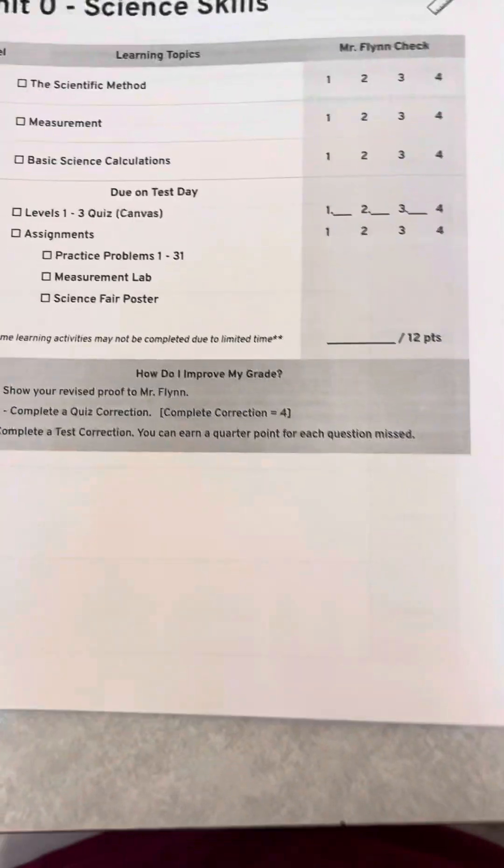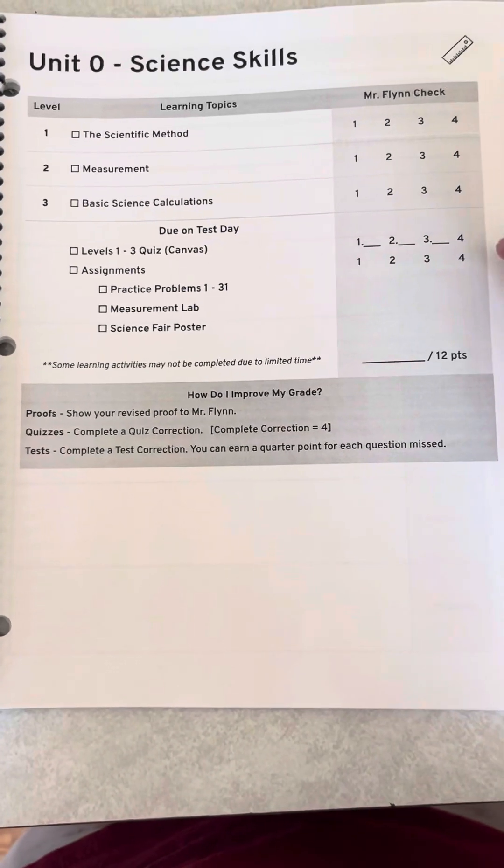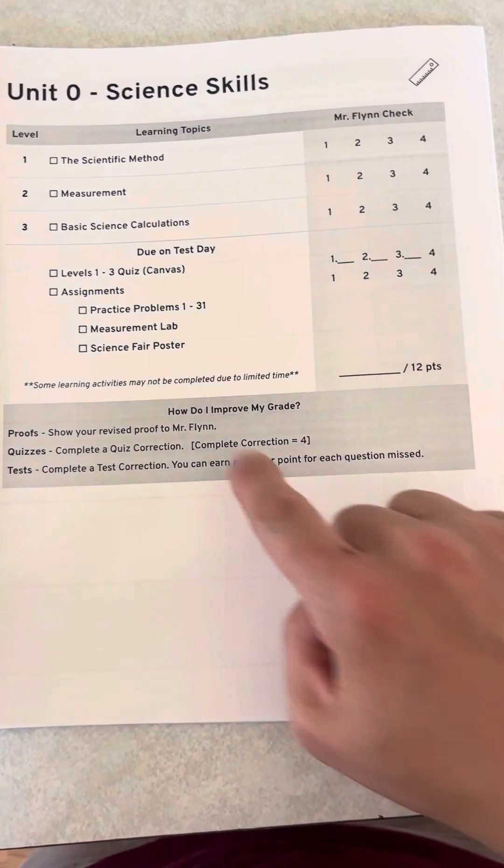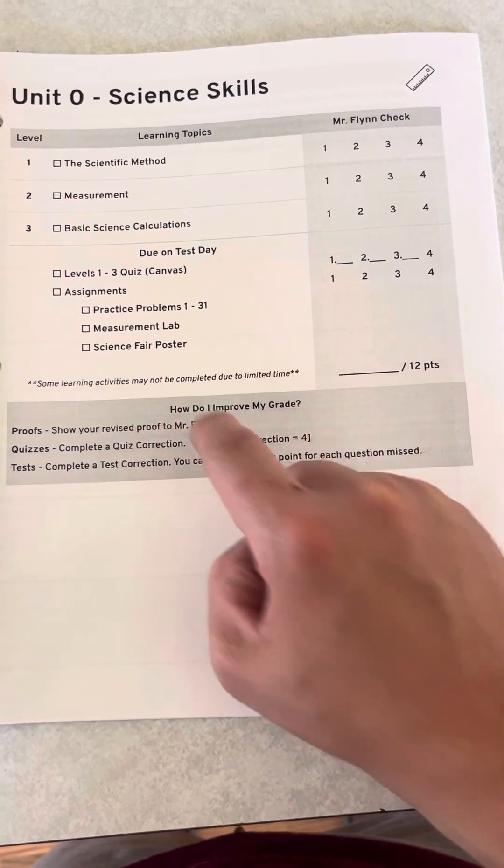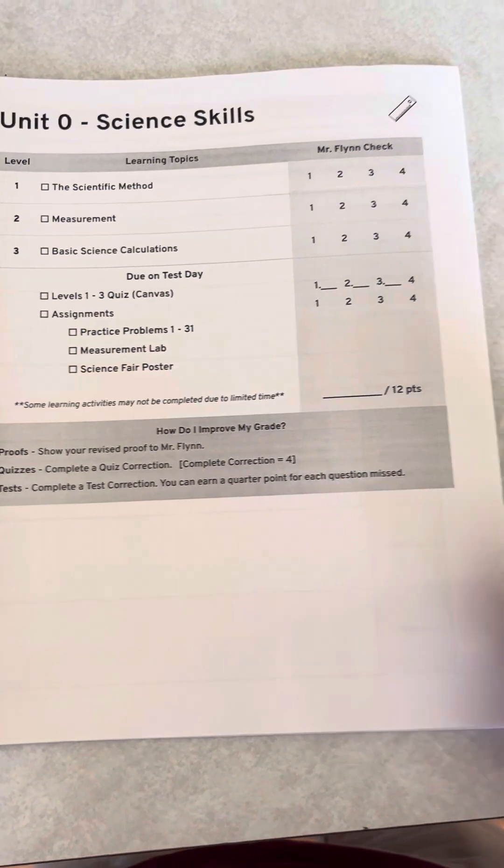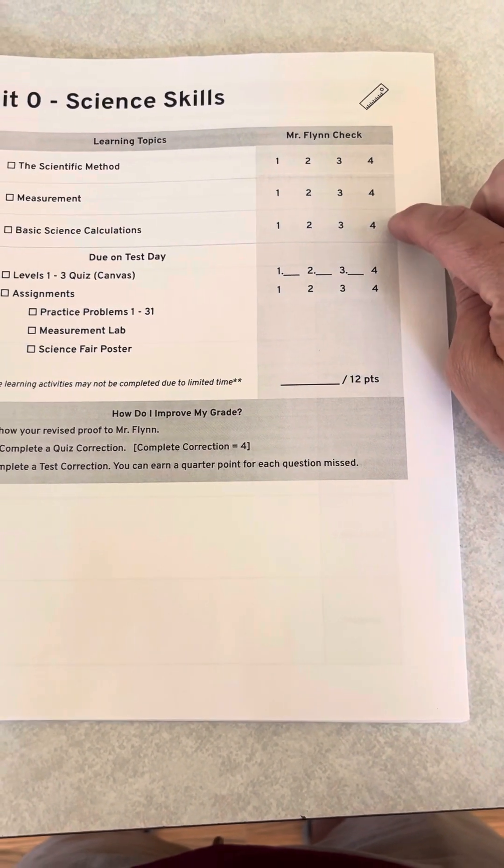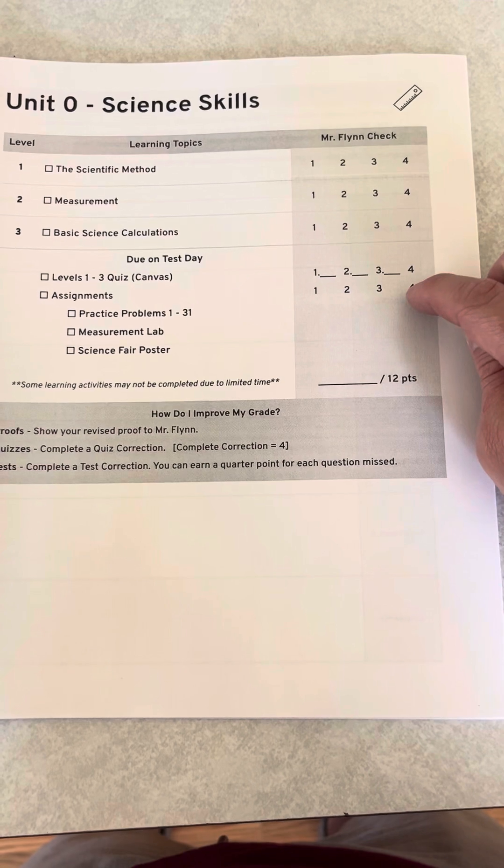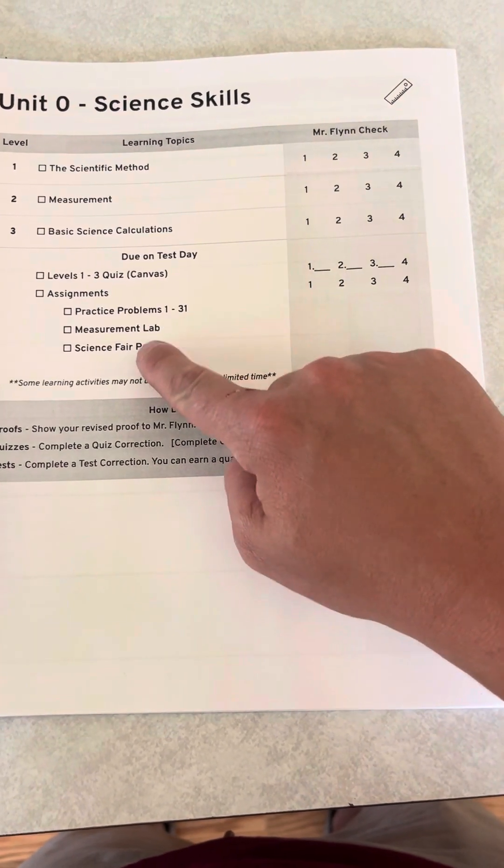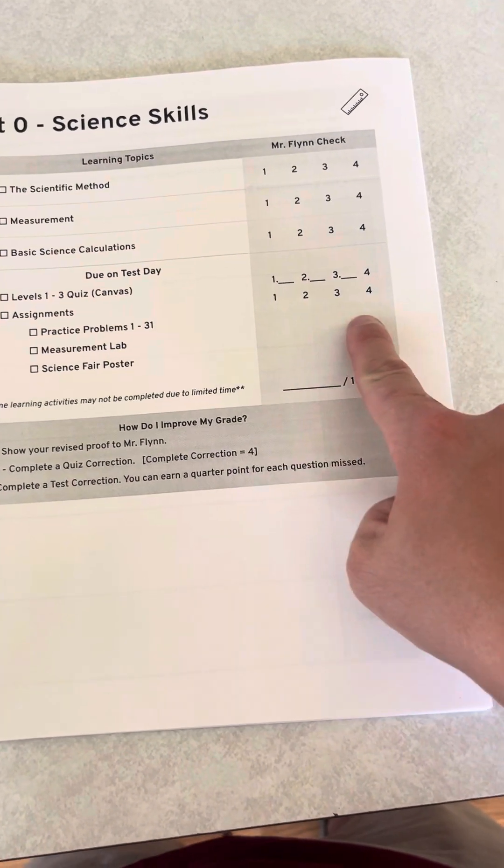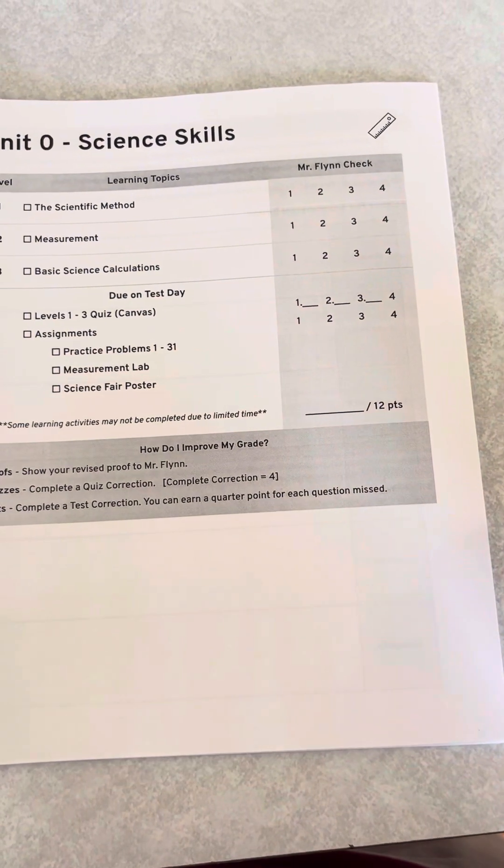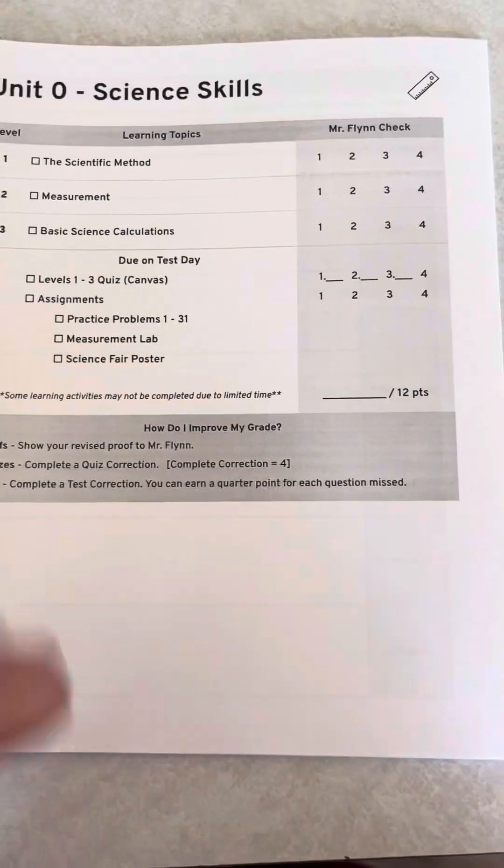But then when we get into here, it's a little different because it's not just levels. It's also got assignments because practice problems, the labs that we're doing, they're on separate sheets of paper. So what they'll do is they'll turn in this book with the first three levels. And then they're also going to turn in these other assignments and I will give them a grade based on how much they got done for each of those based on my rubrics.